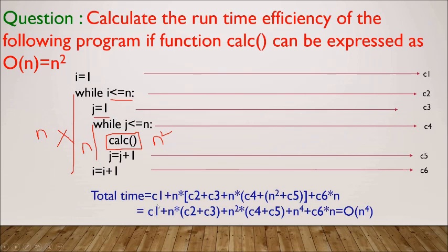Putting it all together: c1 + n·(c2 + c3 + n·(c4 + n² + c5)) + c6·n. The dominant term comes from the nested loops multiplied by the n² from calc: n × n × n² = n⁴. So the final complexity is O(n⁴). That concludes this video. If you like this video, please like and subscribe, don't forget to share. I hope you understood everything — have a nice day!